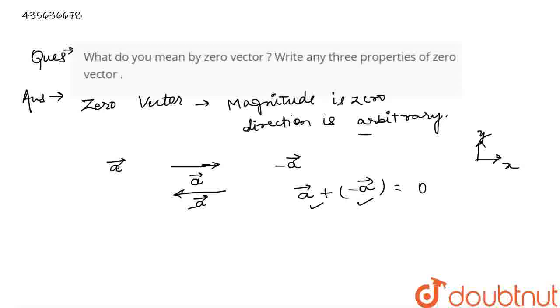But the sum of two vectors can never be a scalar. So it must, it should be a vector. So this is our zero vector. Magnitude is zero, and direction is arbitrary.